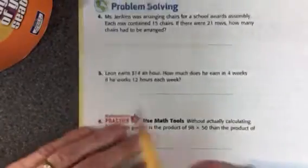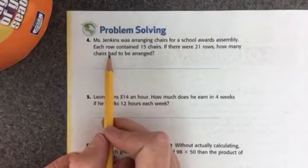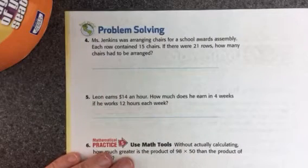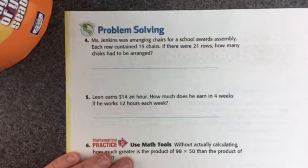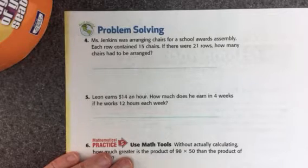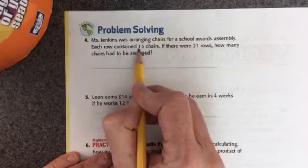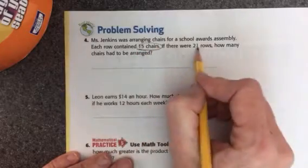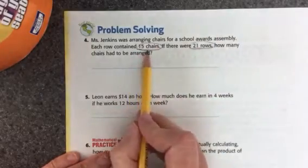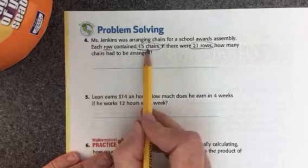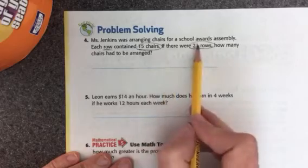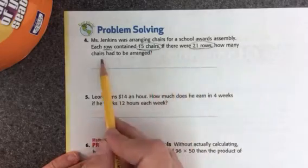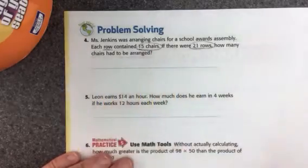Let's take a look at the other side. Number 4. Ms. Jenkins was arranging chairs for a school awards assembly. Each row contained 15 chairs. If there were 20 rows, how many chairs had to be arranged? Well, there are 15 chairs, and there are 21 rows. Each row had 15 chairs, and there's 21 rows. So I'll need to multiply those two numbers to figure out how many chairs had to be arranged.